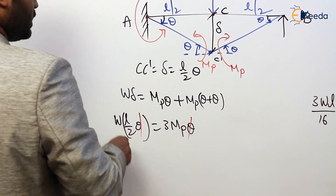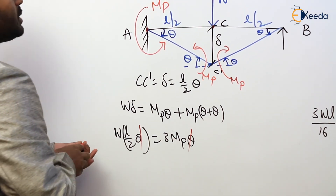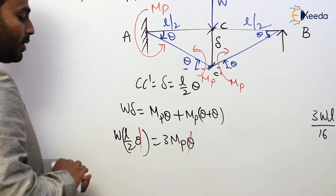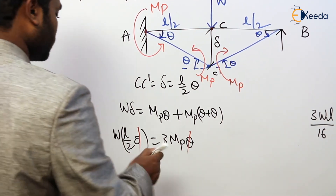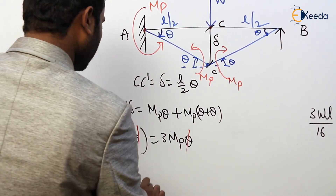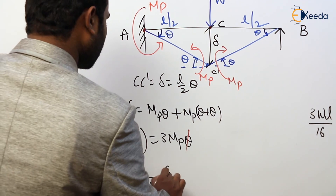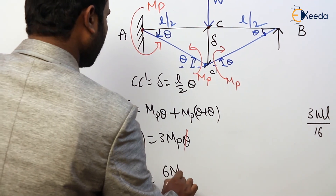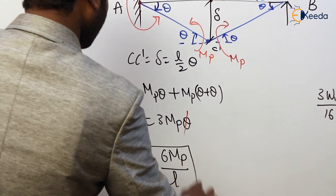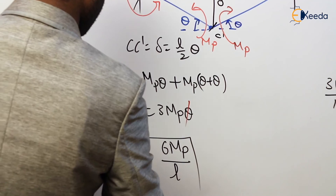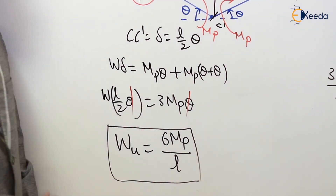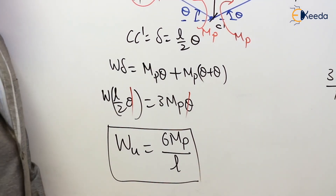Finally, the collapse load for the proper cantilever beam with center point load is W = 6MP / L.